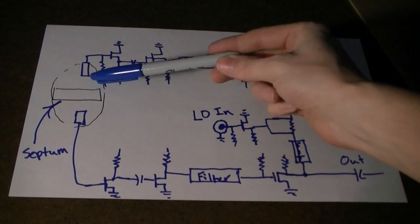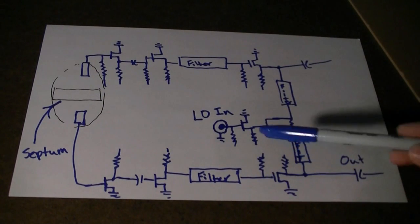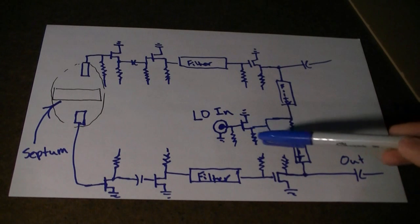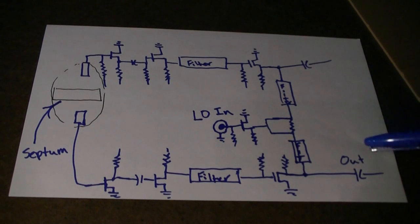This is approximately what the circuit looks like in the LNB. There's two symmetrical circuits, one for each polarization, and both of them are fed by the local oscillator that comes in through the coax. The down-converted signal is passed out of the metal cover and into two DC blocking capacitors. That's where we're going to tap our signal off.